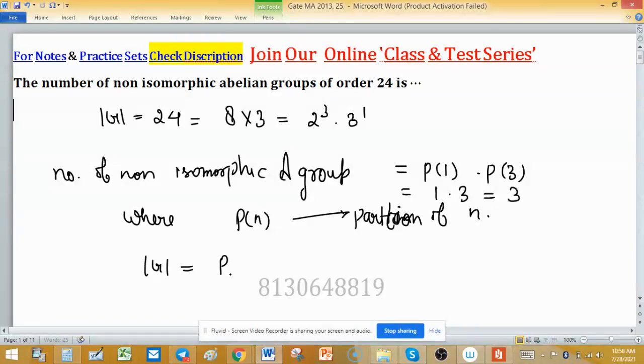So in general we can write: if any order of the group can be written as p₁^n₁ p₂^n₂ and so on, then we have to write partition of powers of prime.